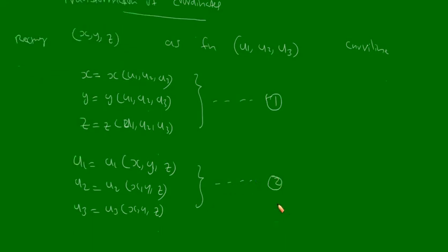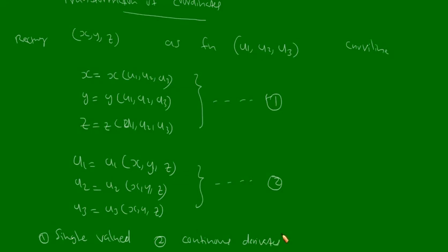We assume that the functions in equations 1 and 2 are single-valued and have continuous derivatives. We take these two conditions so that the correspondence between x, y, z and u1, u2, u3 is unique. That means corresponding to a point with coordinates x, y, z, there is a unique set of curvilinear coordinates u1, u2, u3, and vice versa.